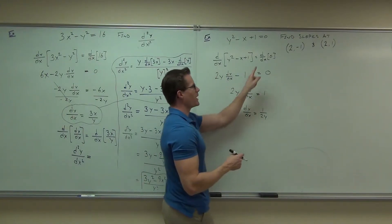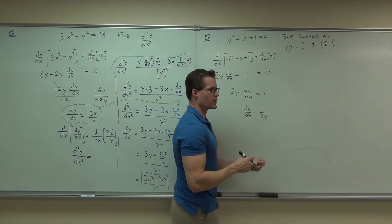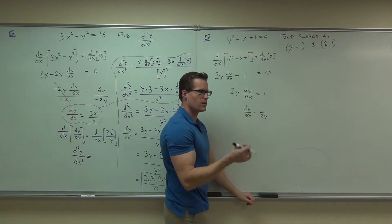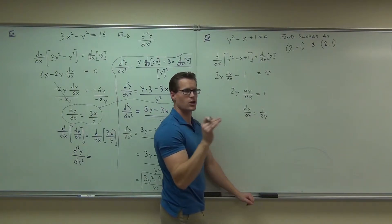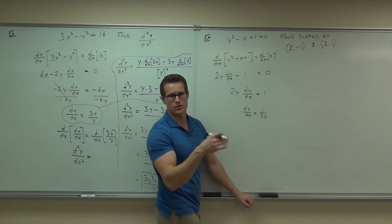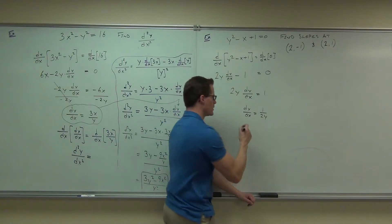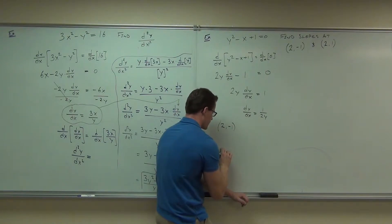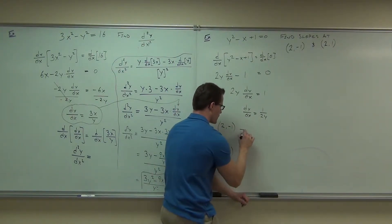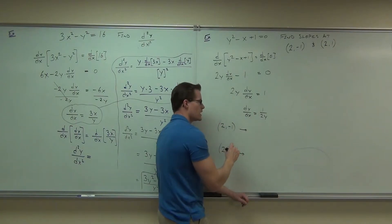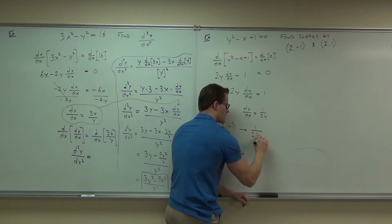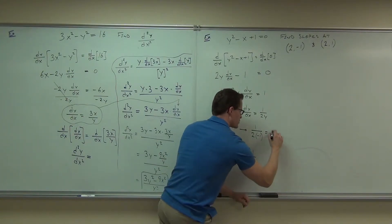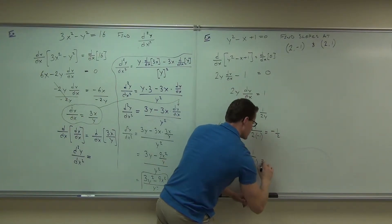Now, it says find the slope at two negative one and two one. Is there a place to plug in the x? Not even a place to plug it in. I don't even care about that. Plug in whatever values you can. If they had both x's and y's, you'd plug in both x's and y's. If it has only x's, plug in x's. If it has y's, plug in y's. So what we're trying to find is a slope at two negative one. For two negative one, I would have one over two times negative one. For two one, I'd have one over two times one. This one gives me negative one half. This gives me positive one half.